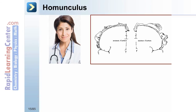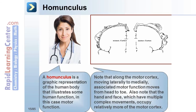When studying the relationship between brain structures and their function, you will often encounter a diagram called a homunculus — a graphic representation of the human body illustrating a human function, in this case motor function. Note that along the motor cortex, as you move laterally to medially, associated motor function moves from head to toe. The hand and face, which have multiple complex movements, occupy relatively more of the motor cortex.